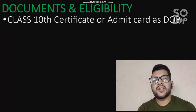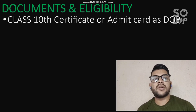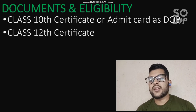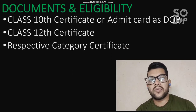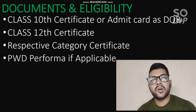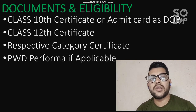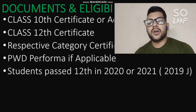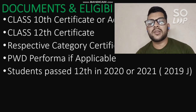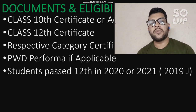Now regarding documents and eligibility: a Class 10 certificate, admit card, or any certificate providing date of birth details will be required at registration, along with a Class 12 certificate and the respective category certificate if you are from General-EWS, OBC, SC, or ST. For PWD candidates, you must download the PWD proforma from the website, fill it with the help of a government hospital with their stamp, and upload it. Students who passed Class 12 in 2020 or 2021 are eligible, and those whose results were announced after June 2019 may also be eligible.